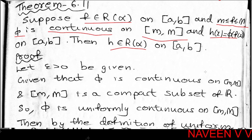Since f is bounded on [a, b], there exist real numbers m and M such that m ≤ f(x) ≤ M for all x in [a, b]. φ is continuous on [m, M], and h(x) = φ(f(x)) for all x in [a, b] — the composition of φ and f. We need to prove that h is Riemann-Stieltjes integrable with respect to α over [a, b].